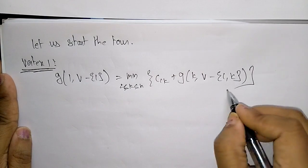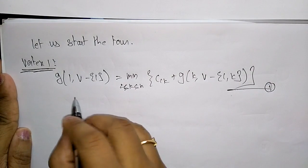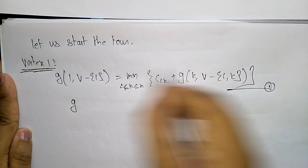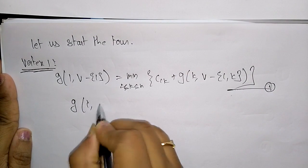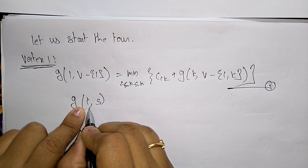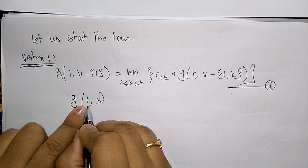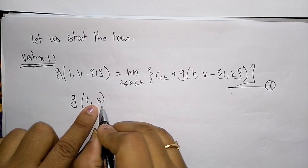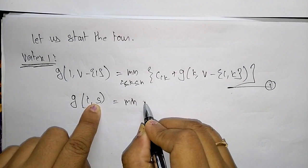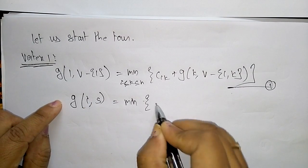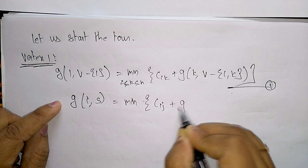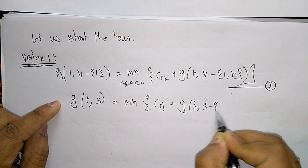The generalized formula is: g(i, S) equals minimum over j in S of c(i,j) plus g(j, S minus {j}). Here, i is the starting vertex, S is the set of cities yet to be visited, and we minimize over all possible next cities j.